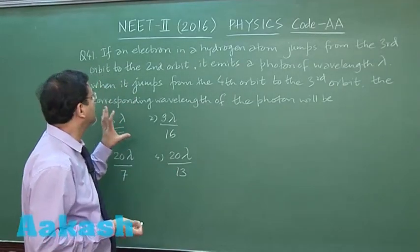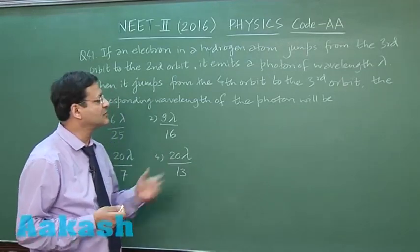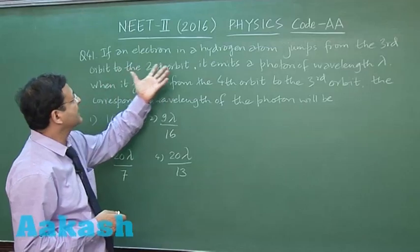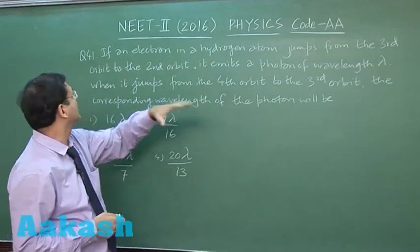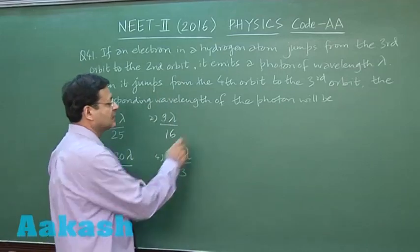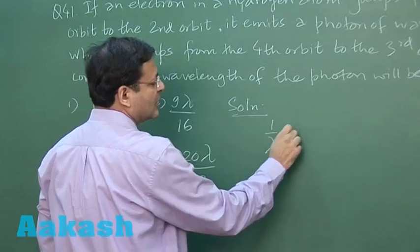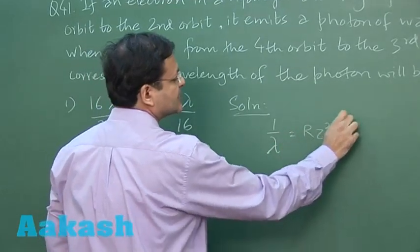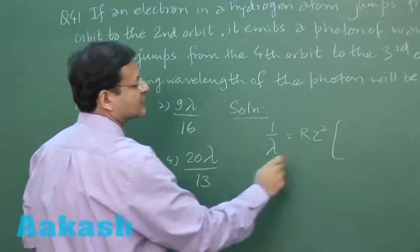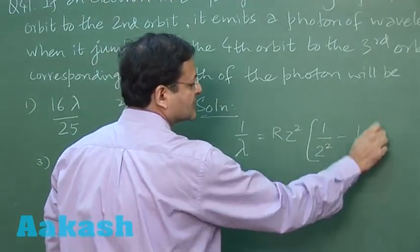Question 41 is based on hydrogen spectra using Rydberg's formula. It says if an electron in a hydrogen atom jumps from the third orbit to the second orbit, it emits a photon of wavelength lambda. Using Rydberg's formula: 1/λ = Rz² and jumping from third to second, I'll write it as 1/2² minus 1/3². This is the first equation.